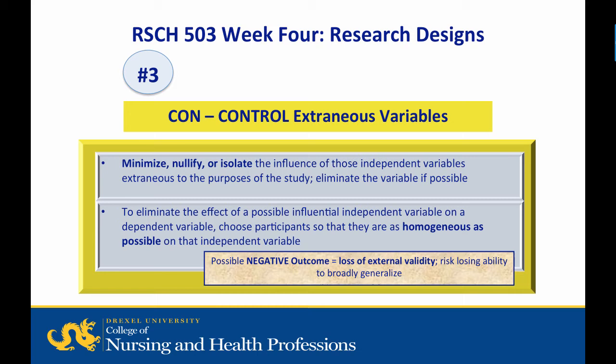The third component of the Max-Min-Con principle is control — controlling extraneous variables. The investigator must minimize, nullify, or isolate the influence of extraneous variables that function as independent variables extraneous to the purpose of the study. To eliminate the influence of unwanted independent variables on a dependent variable, subjects must be chosen to be as homogeneous on that variable as possible. The downside is that a homogeneous sample may risk loss of ability to generalize findings, or limits external validity.